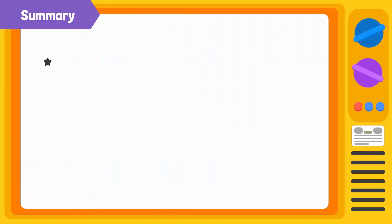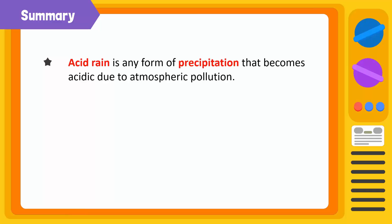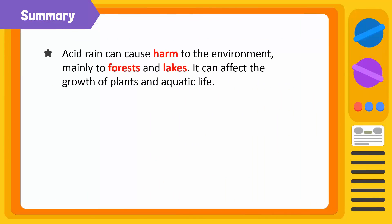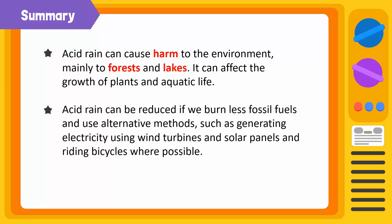Let's summarize what we have learned today. Acid rain is any form of precipitation that becomes acidic due to atmospheric pollution. It is caused when sulfur oxides and nitrogen oxides mix with water vapors, oxygen, and other chemicals in the atmosphere to produce sulfuric acid and nitric acid. Acid rain can cause harm to the environment, mainly to forests and lakes, and can affect the growth of plants and aquatic life. Acid rain can be reduced if we burn less fossil fuels and use alternative methods such as generating electricity using wind turbines and solar panels, and riding bicycles where possible.